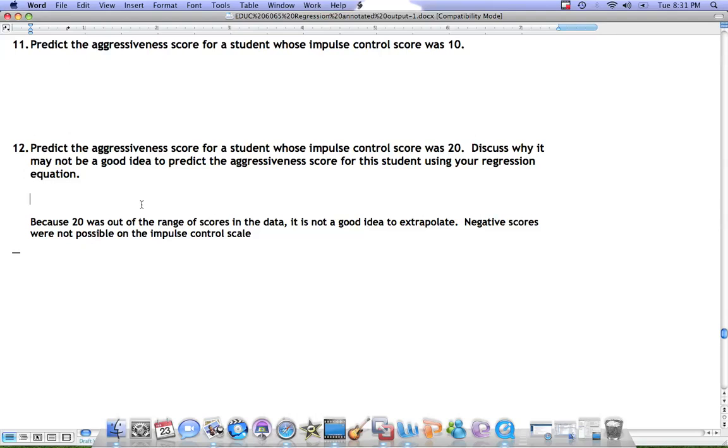One problem with using the regression equation outside of the scope of the data is that it's not always appropriate to extrapolate. Extrapolation, again, is to use the prediction for values of x that were not included in the original data set.